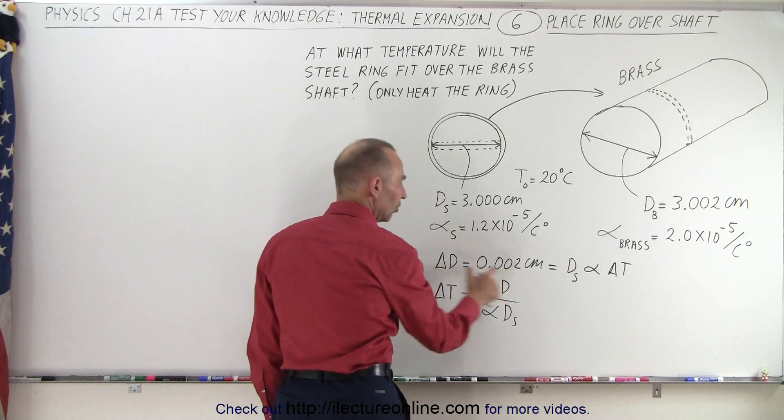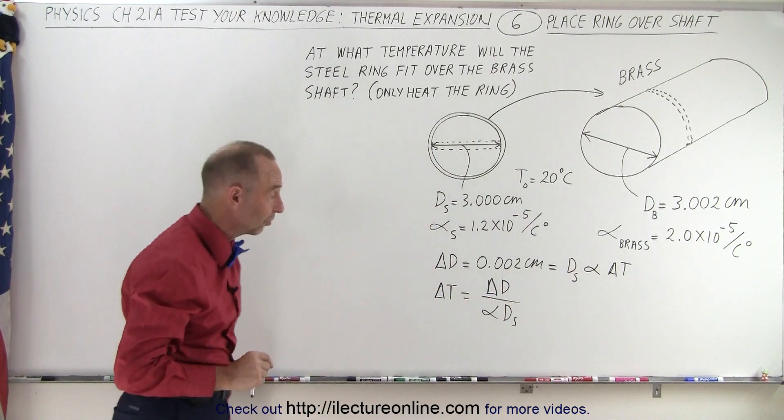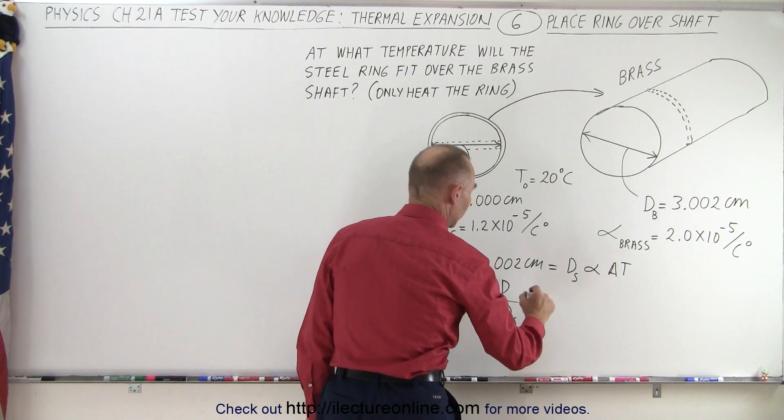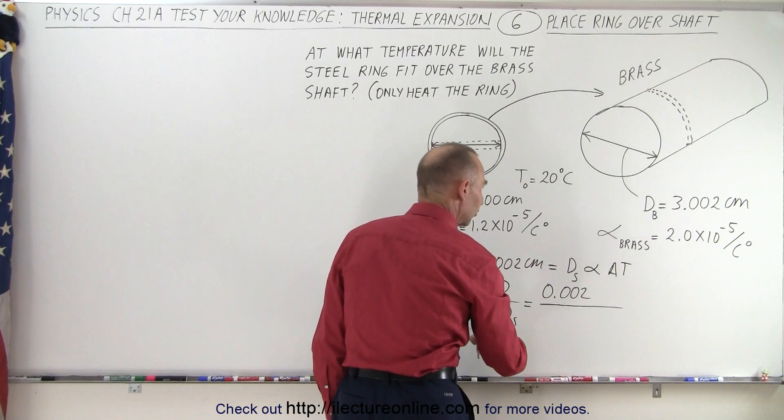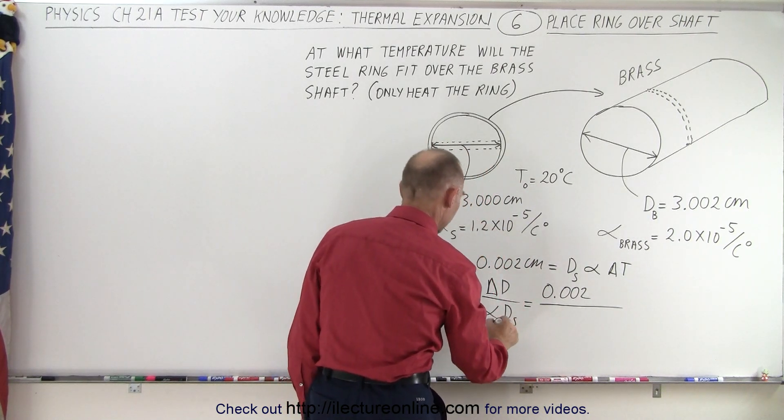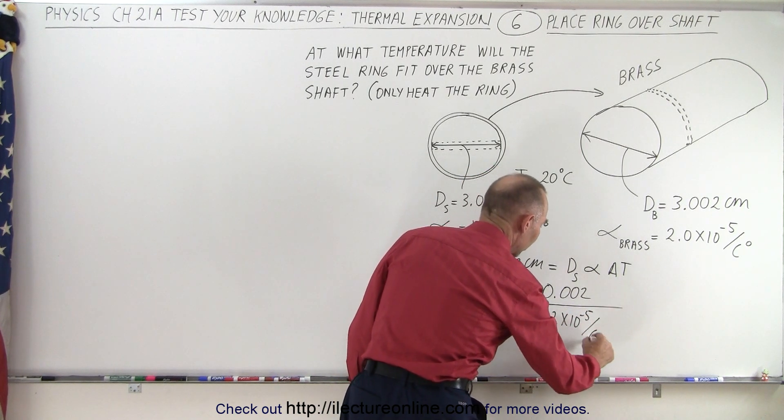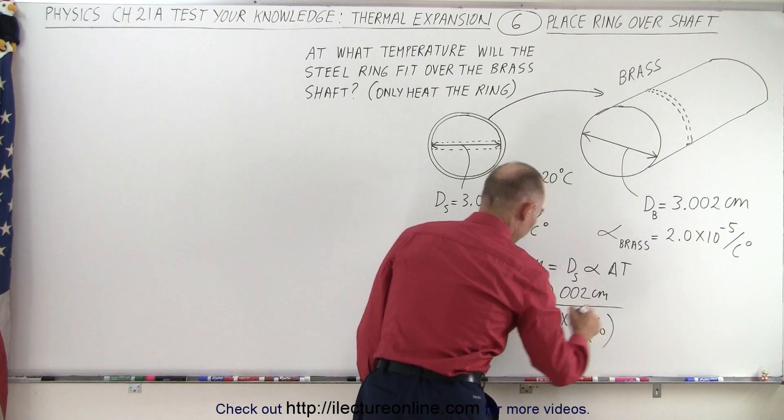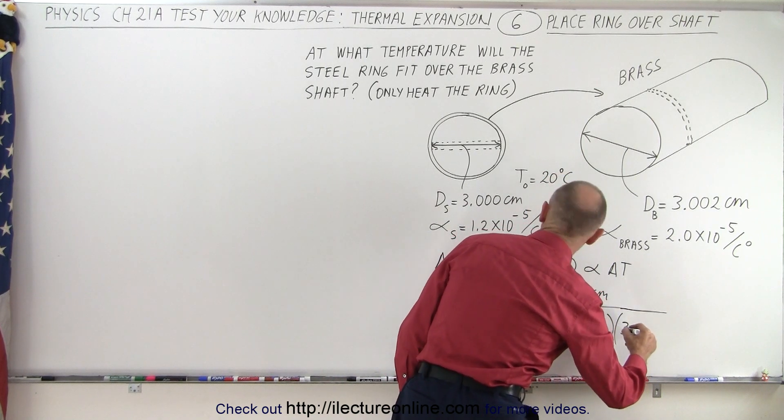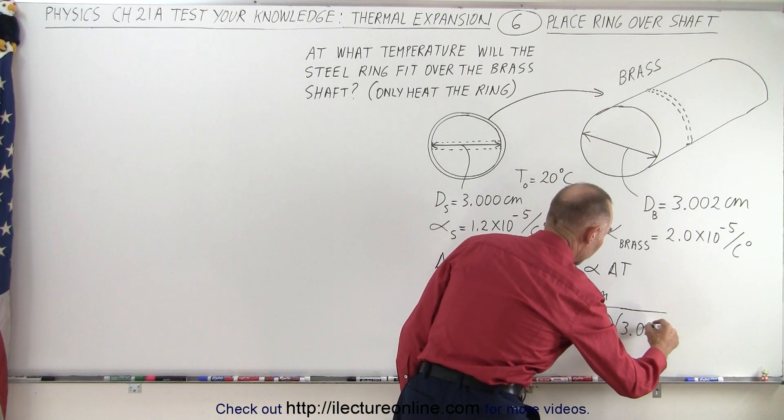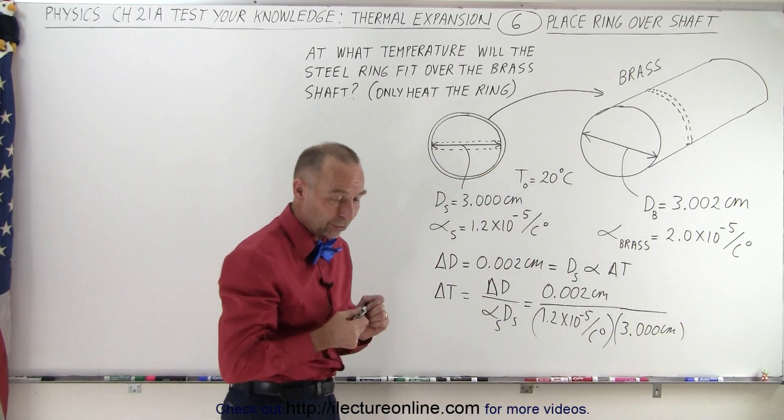So we take the change divided by the coefficient divided by the original diameter, and that should give us the change in temperature. So that means we want 0.002 centimeters divided by the coefficient—and this would be the coefficient of steel, that would be 1.2 times 10^-5 per degree Celsius—and then the original diameter would be 3.000 centimeters, so the centimeters would cancel, and we end up with Celsius degrees.